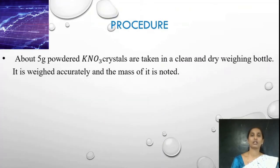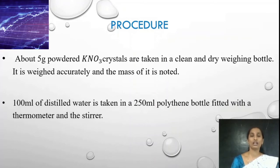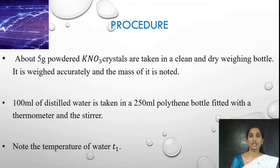Coming to the procedure. First, we need to take about 5 grams of powdered potassium nitrate crystals in a clean and dry weighing bottle. It is weighed accurately and the exact mass is noted. Once the exact mass is noted, fill 100 ml of water in a 250 ml polythene bottle fitted with a rubber cork and a stirrer. Once fitted, note down the temperature of the water and record it — let that be T1.